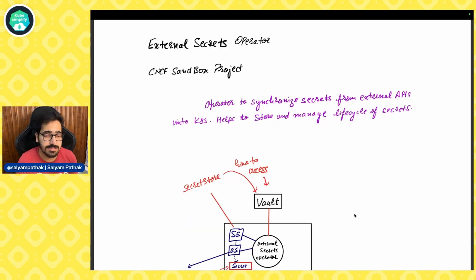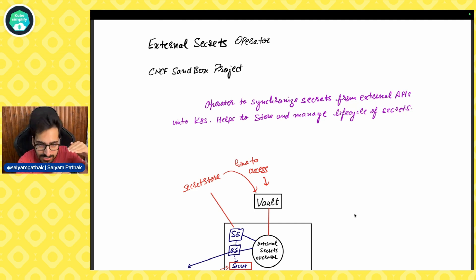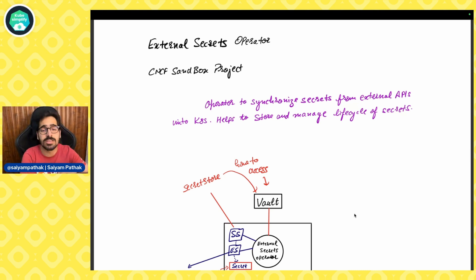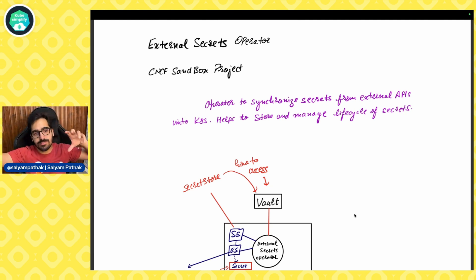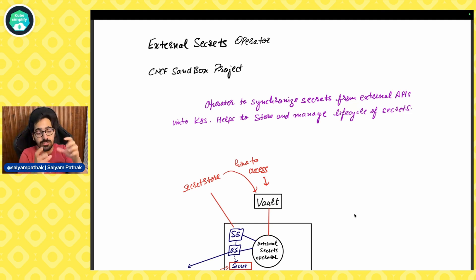External Secrets Operator is a CNCF sandbox project. It is basically an operator to synchronize secrets from external APIs into Kubernetes. Whenever you write those custom resource definitions after deploying this operator onto a Kubernetes cluster, it will fetch those secrets from the APIs as specified in the spec section, then create a Kubernetes secret inside your cluster, always sync that back, and you can use that particular secret with your pods.